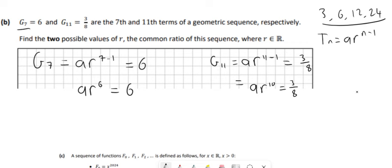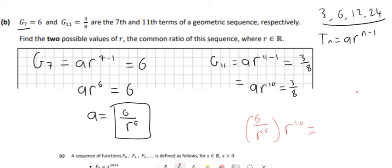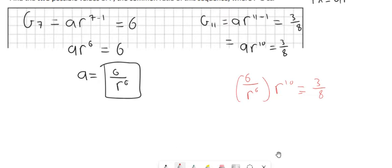And it's just using simultaneous equations then. I'm going to let A be equal to 6 over R to the power of 6 in this one. So now A is equal to 6 over R to the power of 6, so I'm going to put 6 over R to the power of 6 in instead of A in the other equation. So 6 over R to the power of 6 multiplied by R10 is equal to 3 over 8. Then if I do R10 divided by R6 I just get R4, so 6R4 is equal to 3 over 8. So then R4 is equal to 3 over 48 or 1 over 16.